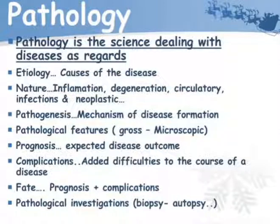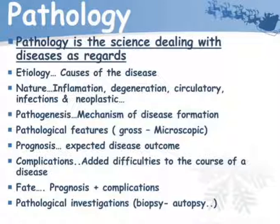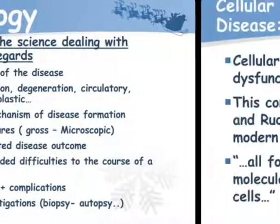Etiology is the cause of the disease. Nature includes inflammation, degeneration, circulatory, infection, and neoplastic. Pathogenesis refers to the mechanism of disease formation. Pathological features involve gross and microscopic findings. Prognosis is the expected disease outcome. Complications are added difficulties in the course of a disease. Fate includes prognosis plus complications. Pathological investigations include biopsy and autopsy.